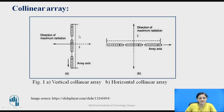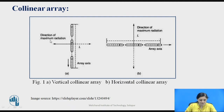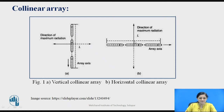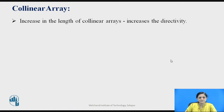This figure shows the collinear array. Figure A shows the collinear array arranged in the vertical manner — the elements are connected vertically. In the second figure, the elements are connected horizontally, placed one after the other. The total length is denoted with capital L, and the direction of maximum radiation is perpendicular to the array axis. In the horizontal collinear array, the array axis is placed horizontally. These two types are defined as vertical and horizontal collinear array.